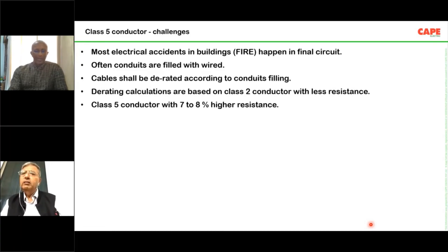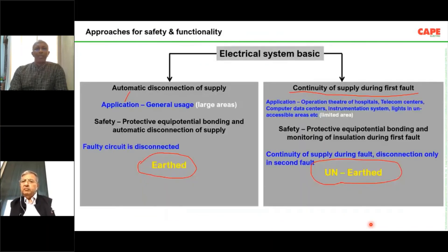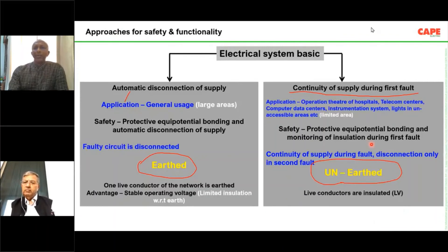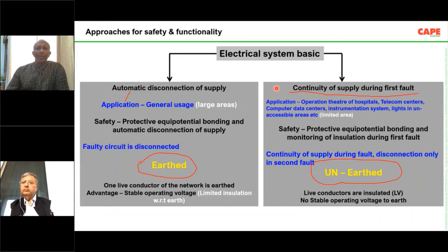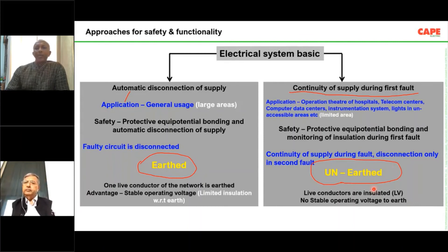There are two basic philosophies: an earthed system where the supply trips within a certain time, and an unearthed system. In most foreign countries, safety services — lighting for escape routes, corridors, fire safety systems, smoke extraction — are required to use an unearthed system. In an unearthed system, even if there is a fault, nothing happens and you can continue to operate. They insist on using isolation transformers, particularly for all lighting installations.